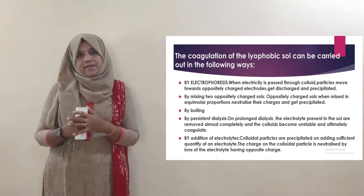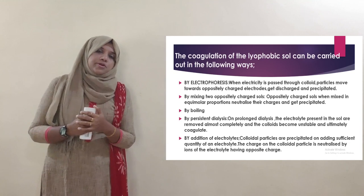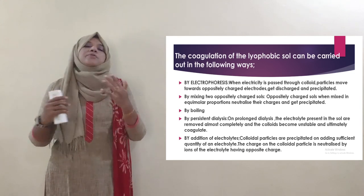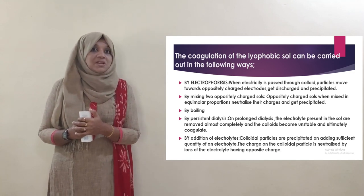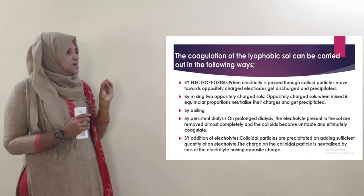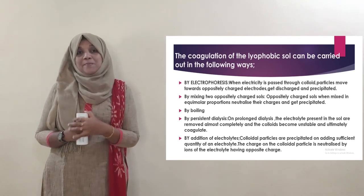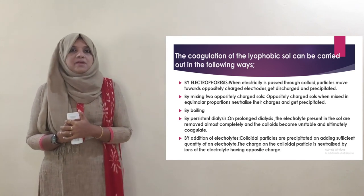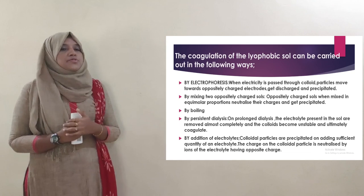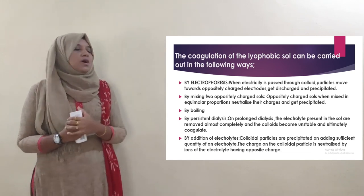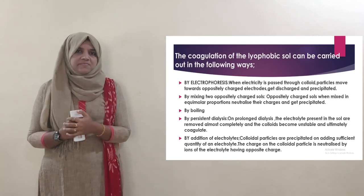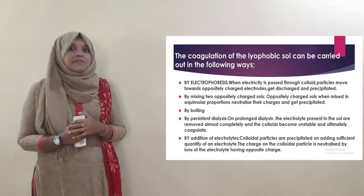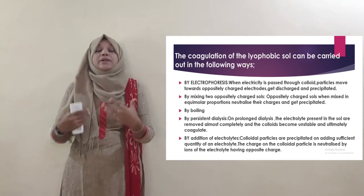Third method: by boiling. Boiling causes the charge on the colloidal particles to reduce, leading to increased collision and ultimately precipitation. Fourth method: by persistent dialysis. Dialysis removes the electrolyte present in the sol almost completely.